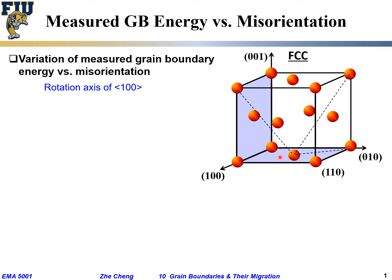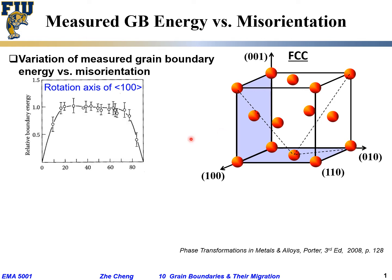Starting from zero degrees and rotating to 90 degrees toward [010], the relative grain boundary energy starts at zero because at zero misorientation it's a perfect match. It then increases linearly up to around 10 to 15 degrees — what we call the low-angle tilt boundary regime. Beyond that it reaches a plateau or constant value, which is quite often around one third of the surface energy.